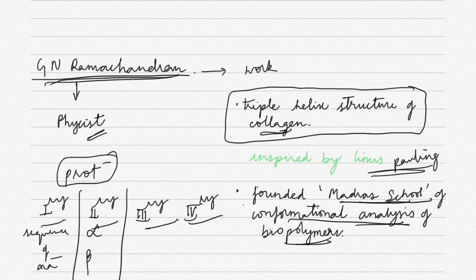So collagen has triple helix structure and this is what G.N. Ramachandran gave. To understand about these primary, secondary, tertiary, quaternary structures of proteins, we have to read the chapter biomolecules.